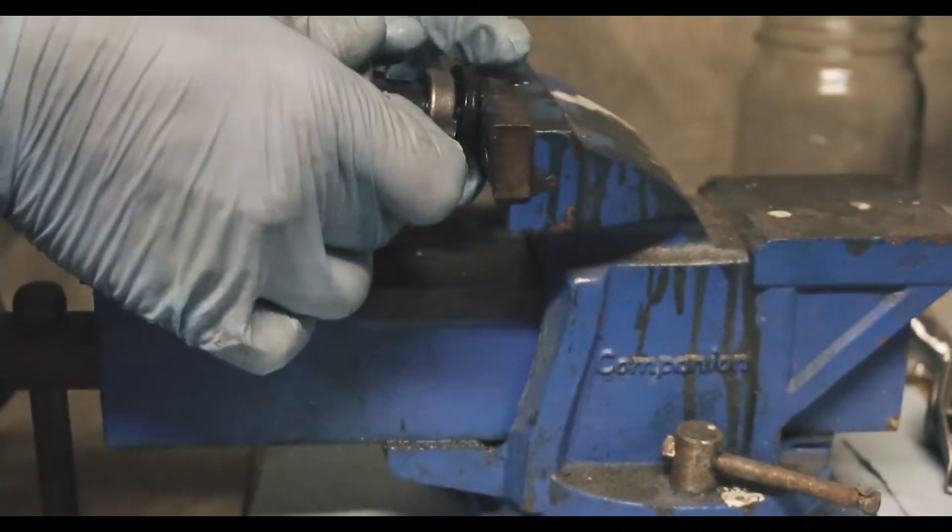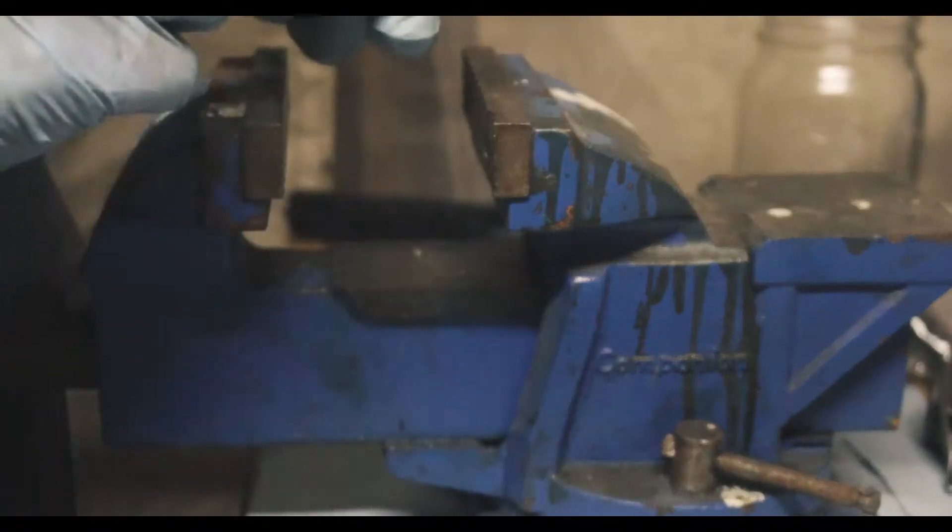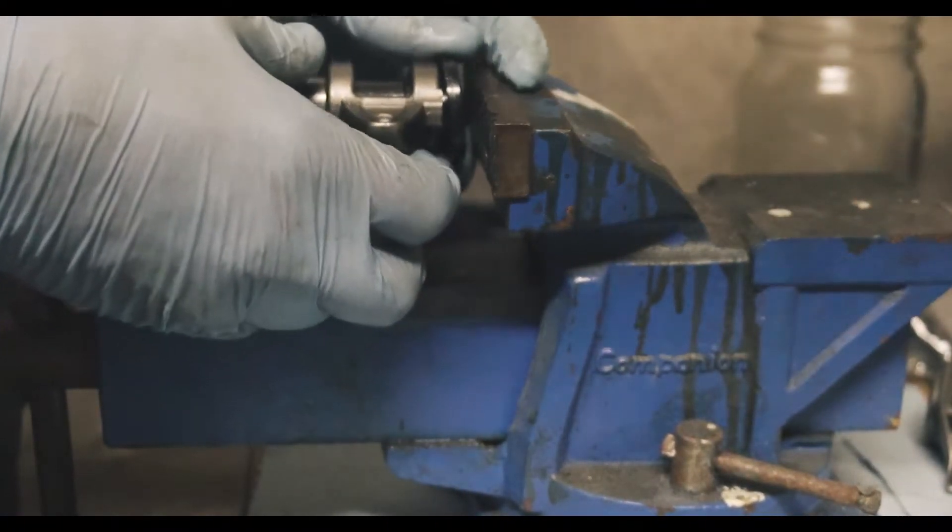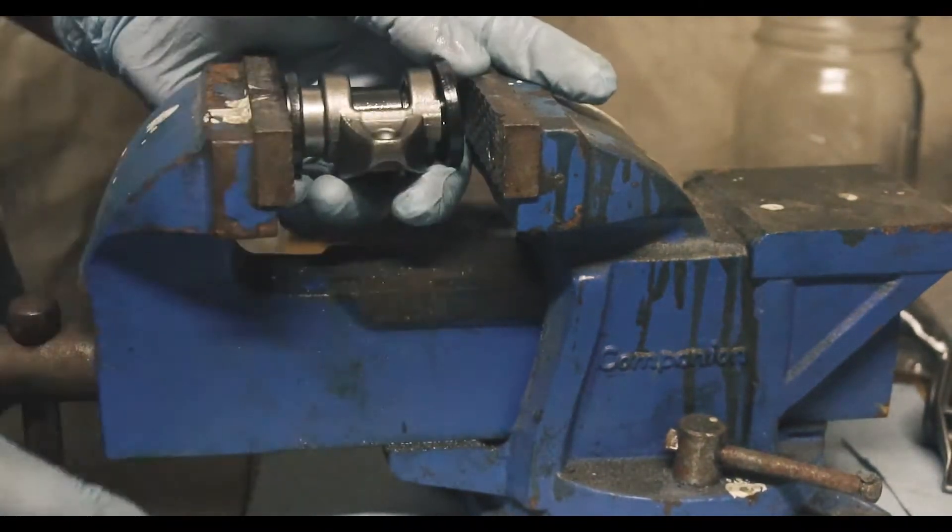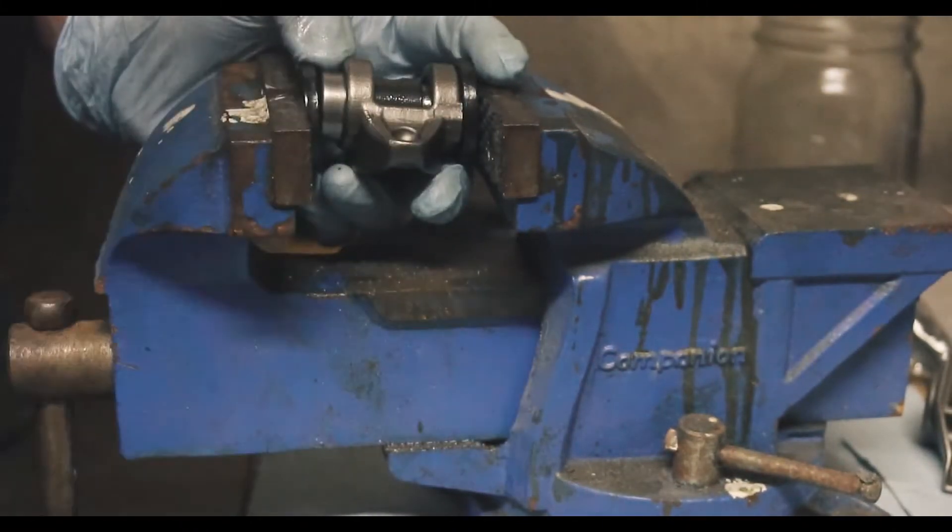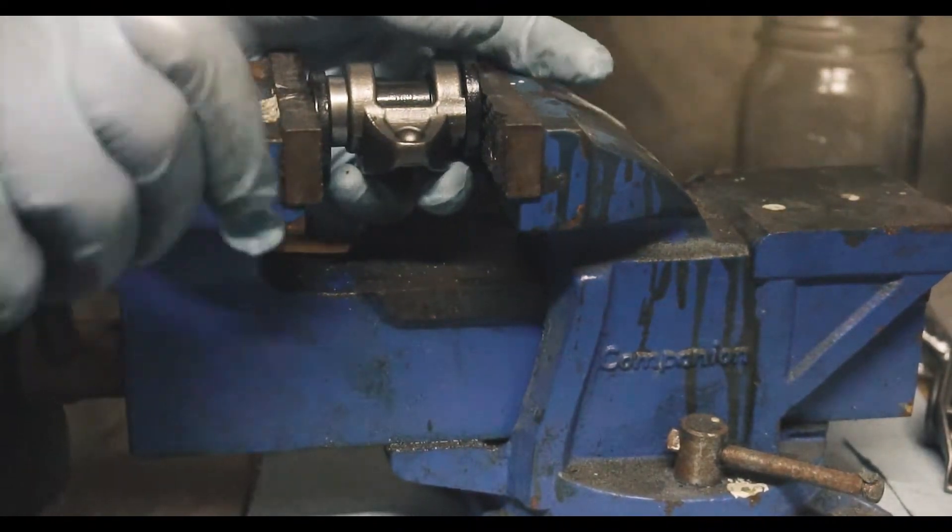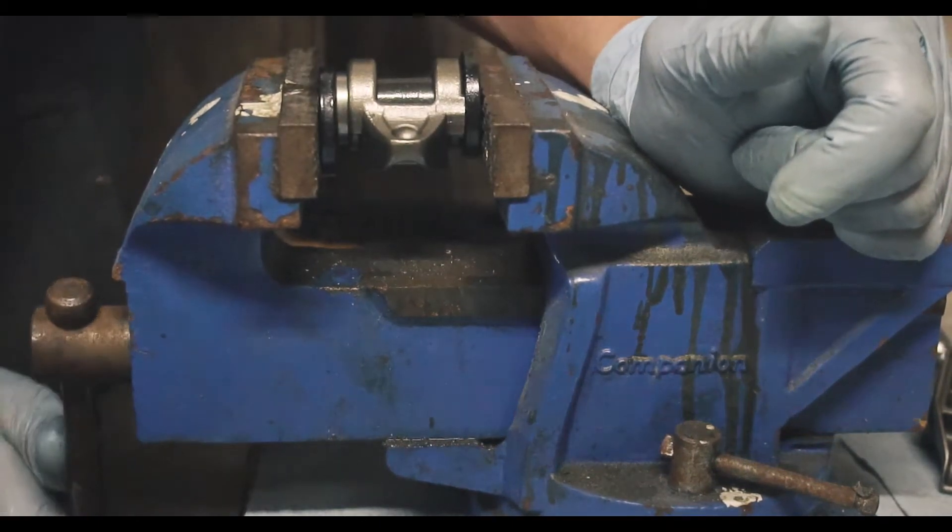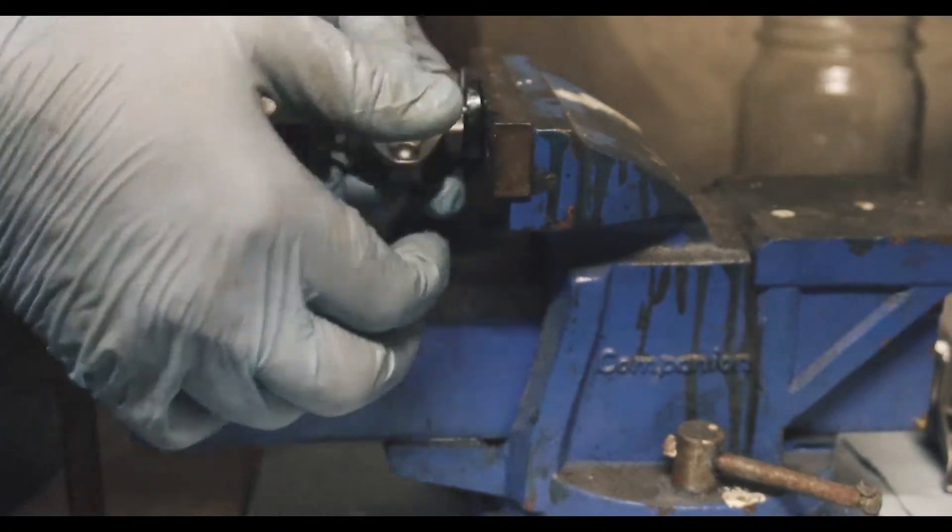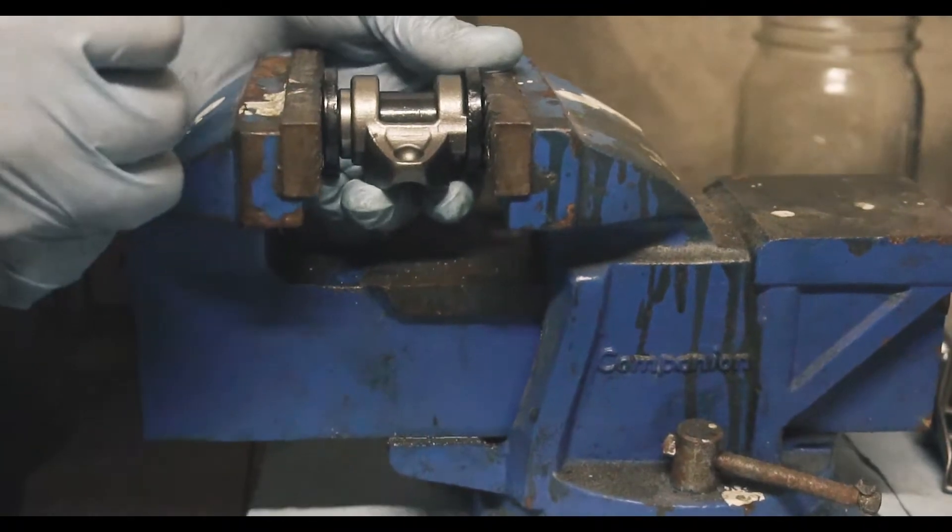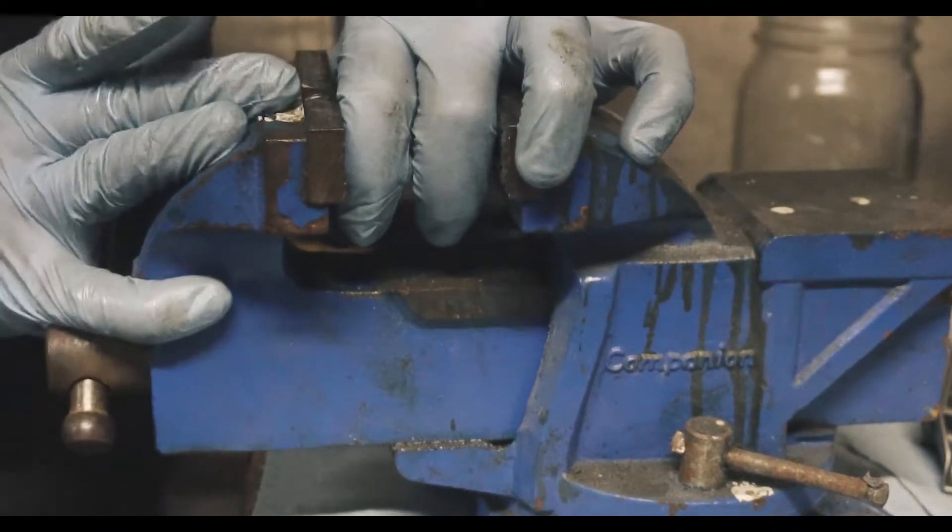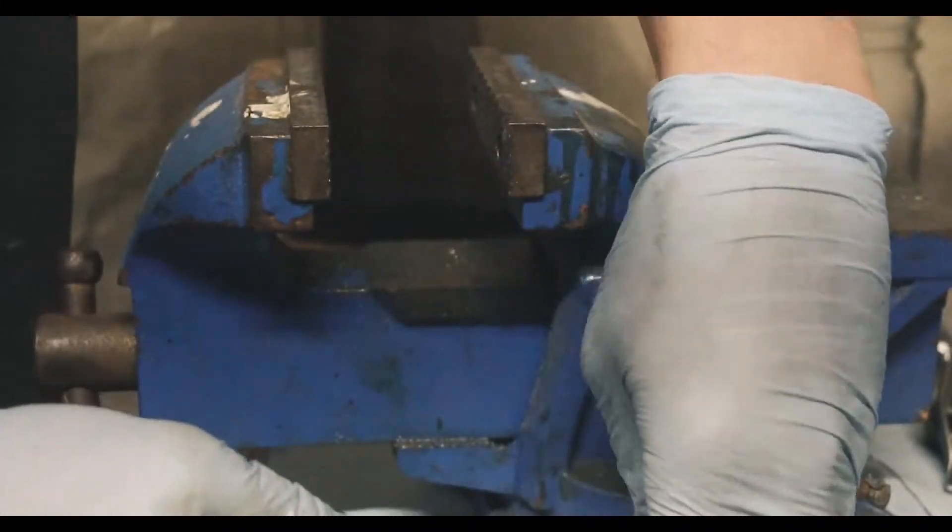So, back it out. Put it in there. Put the bearing in loosely. Try to get everything lined up straight. Don't want to go in crooked because that would be no good. Make sure everything is lined up again. It's a lot easier than the press. There you go.